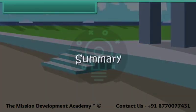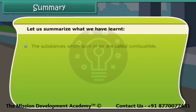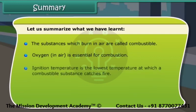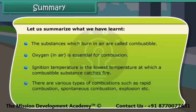Summary: The substances which burn in air are called combustible. Oxygen in air is essential for combustion. Ignition temperature is the lowest temperature at which a combustible substance catches fire. There are various types of combustion such as rapid combustion, spontaneous combustion, explosion, etc.